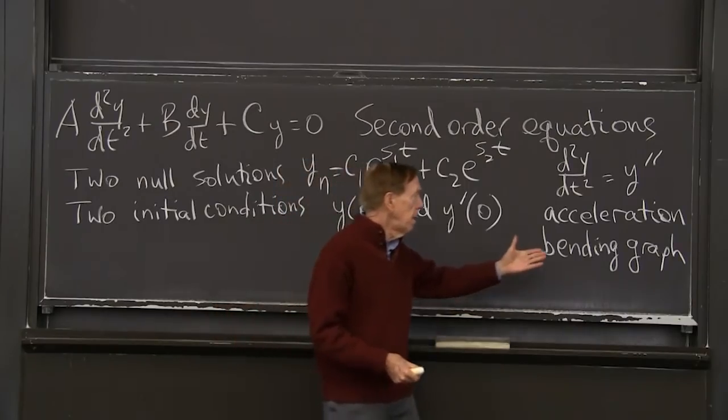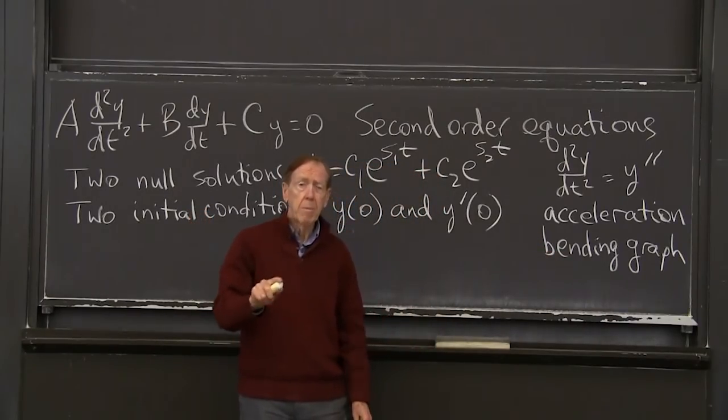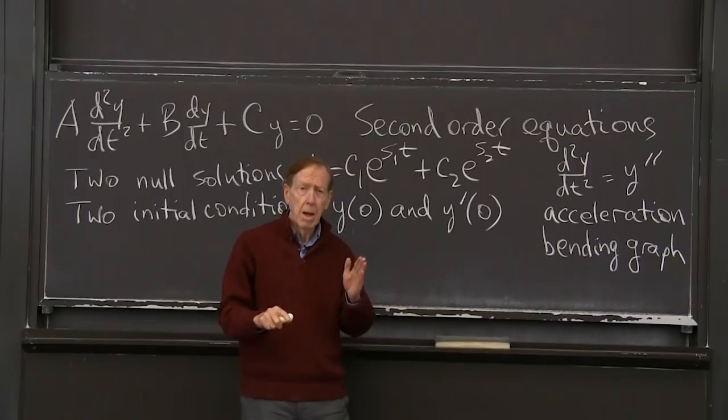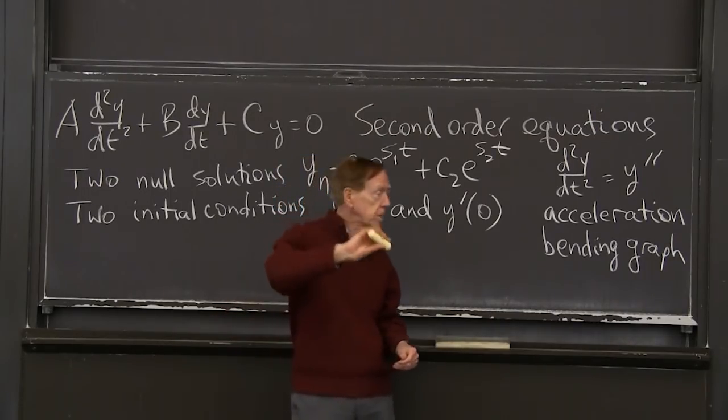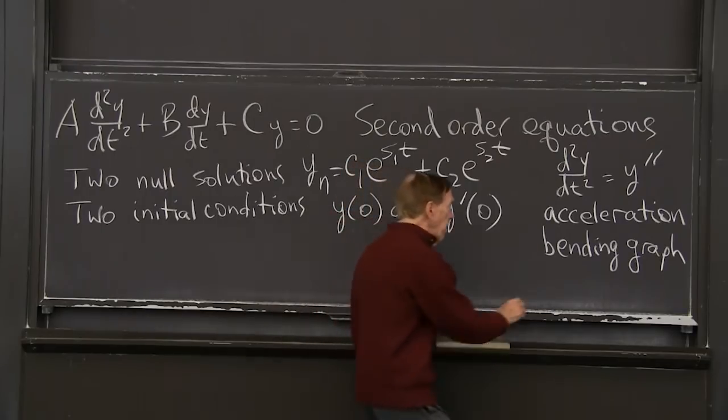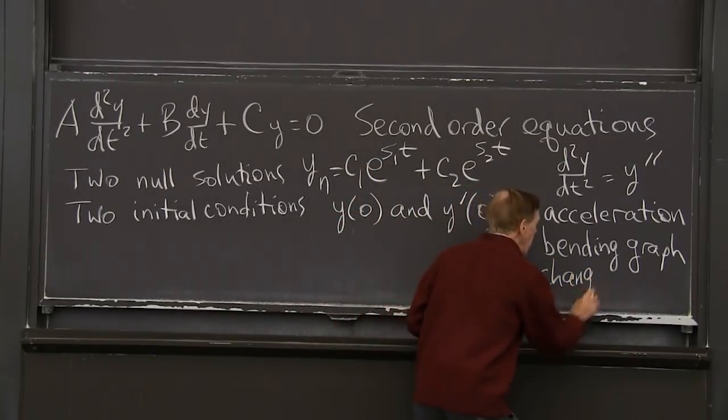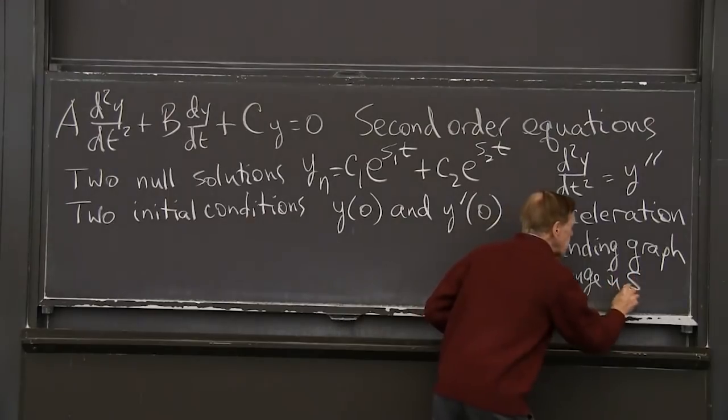And in a graph of a function, y double prime shows up in bending of the graph, because bending is a change in slope. Bending is a change in the slope.